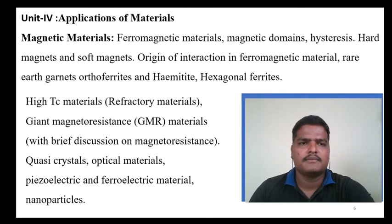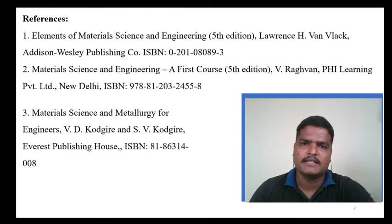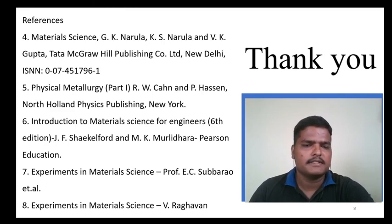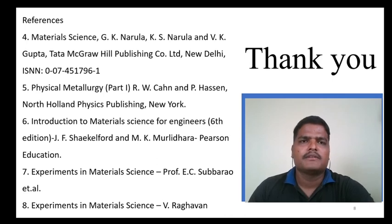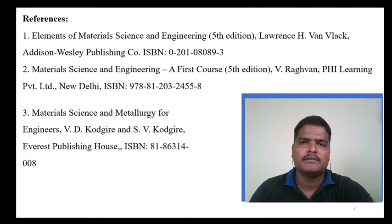The reference books for this course are as follows. I will mostly use the first two references: Elements of Material Science and Engineering, fifth edition by Lawrence Van Vlack, and Material Science and Engineering by V. Raghavan. There are a total of eight references, and I will refer to the others whenever needed. If those references are not available to you, don't worry — I will provide notes from those references.